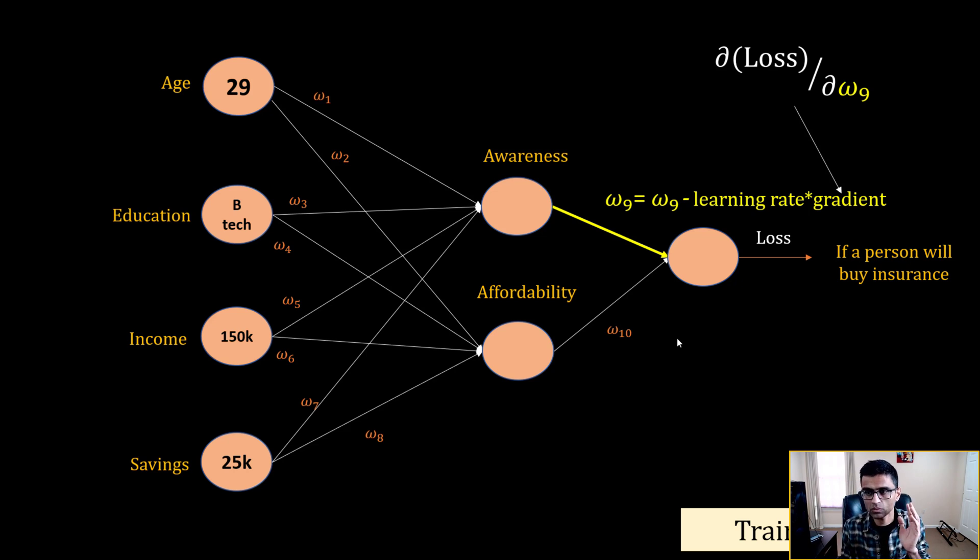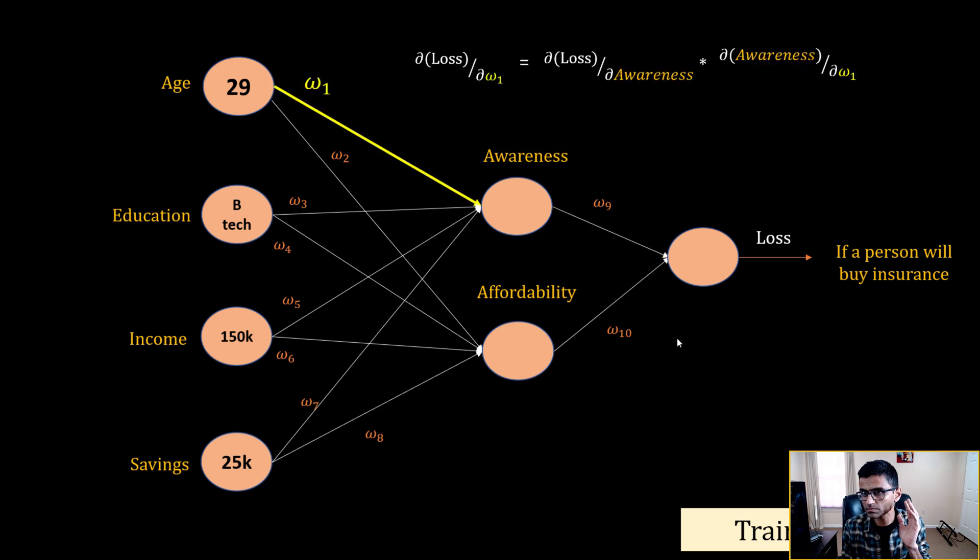And now when we think about w1, you want to update w9, w10, all the weights. So when you further back propagate, the gradient equation would be derivative of loss with respect to w1, and that will be, if you have seen my chain rule tutorial, derivative of loss with respect to awareness times derivative of awareness with respect to w1, which means how much awareness changes for a given change in w1.